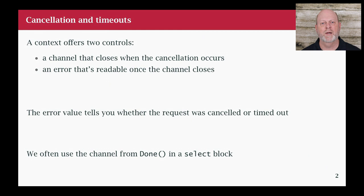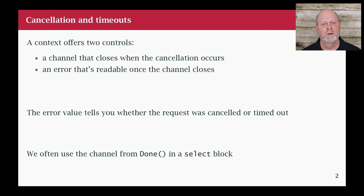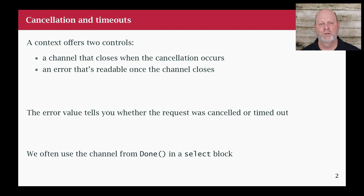With a context, we get a couple things. The first is a channel - there's a function called Done, and if we call it, it gives us a channel we can listen to. If that channel becomes ready to read, we've been signaled and should stop working. If we get that signal, there's another function called Err, and if we call that we'll get a reason why we were told to stop - maybe we timed out, or there was an explicit cancellation. We're going to see select often because we're listening to a channel, and the Done channel is likely to show up in a select block when we use it in practice.